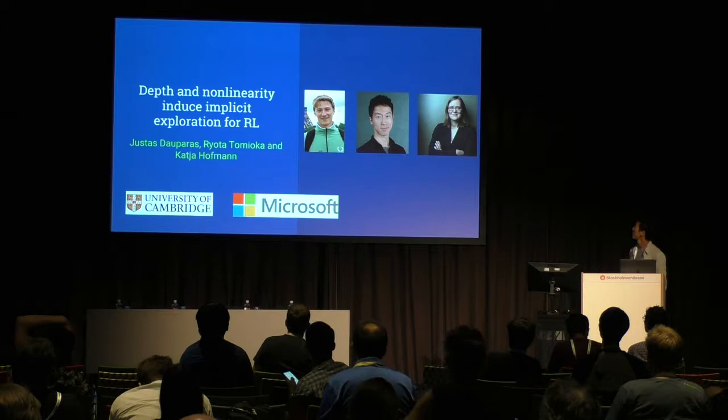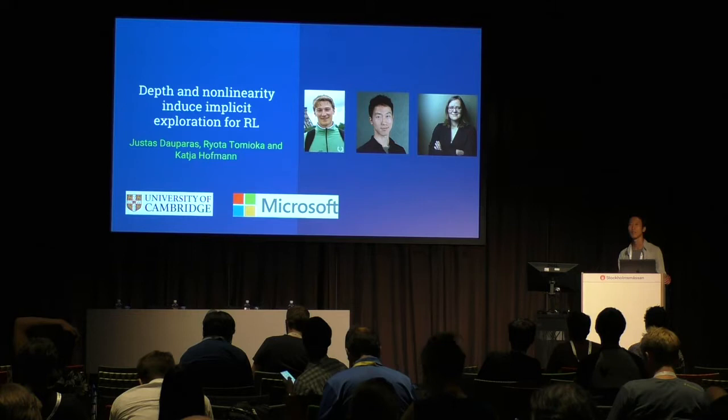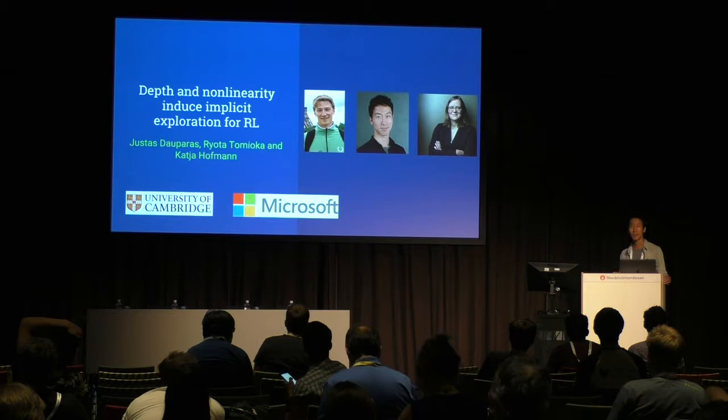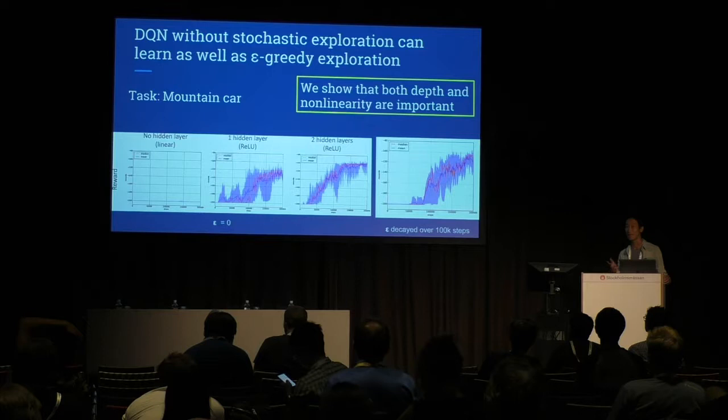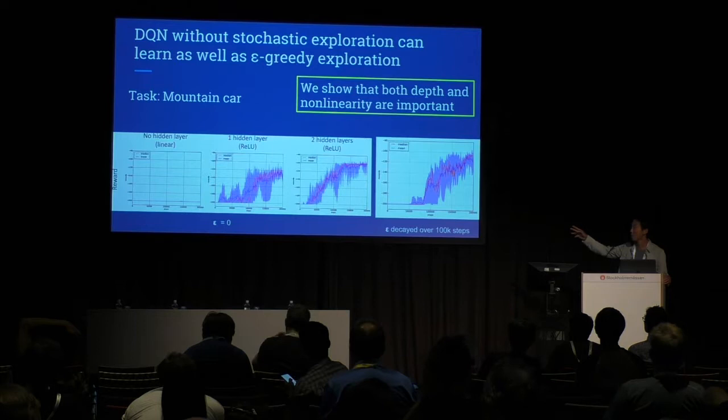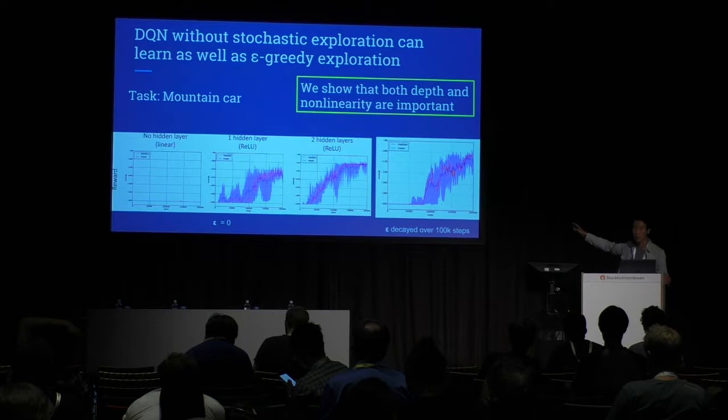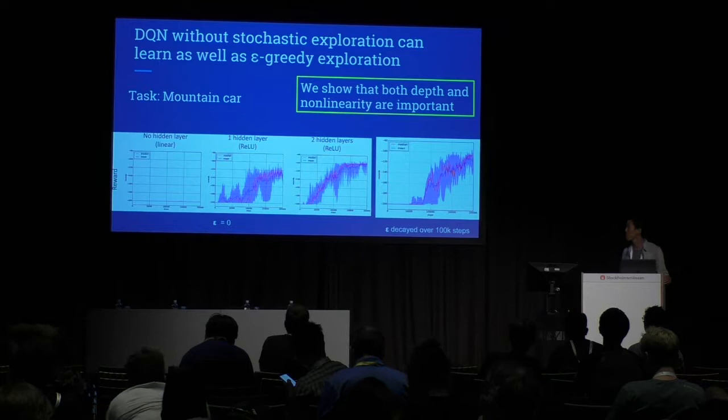Hi everyone. I'm Riotta, and this is joint work with Justus and Katja. In Q-learning, epsilon-greedy is the common way of exploring. But have you ever set epsilon to zero? We show that it works — and it works if you make your network deep and non-linear. I show epsilon=0 with no hidden layer (linear), one hidden layer, and two hidden layers. It starts to get better and is almost as good as the typical epsilon-decaying scheme.